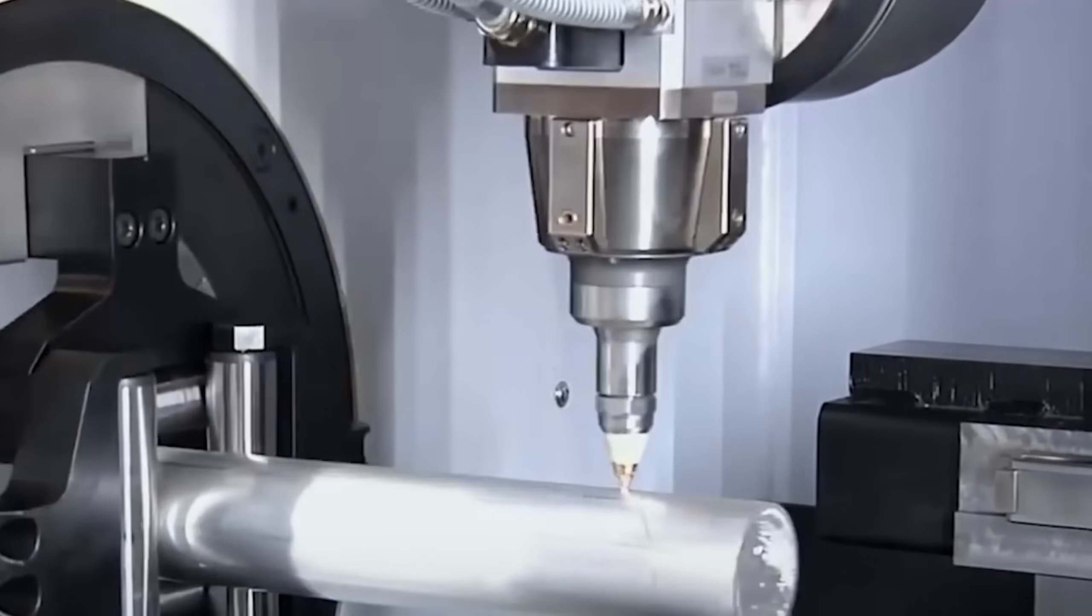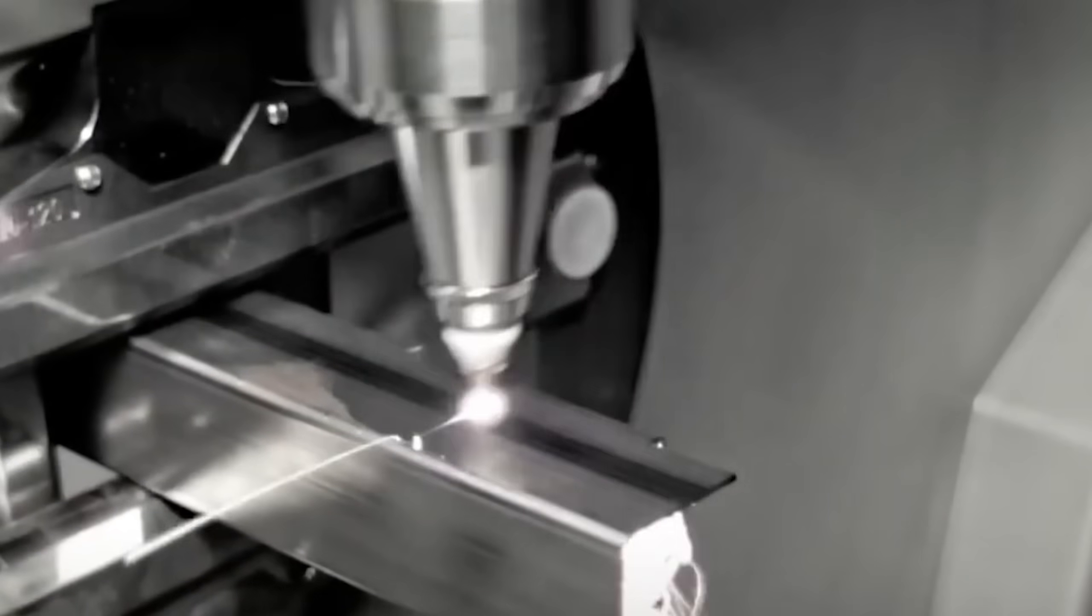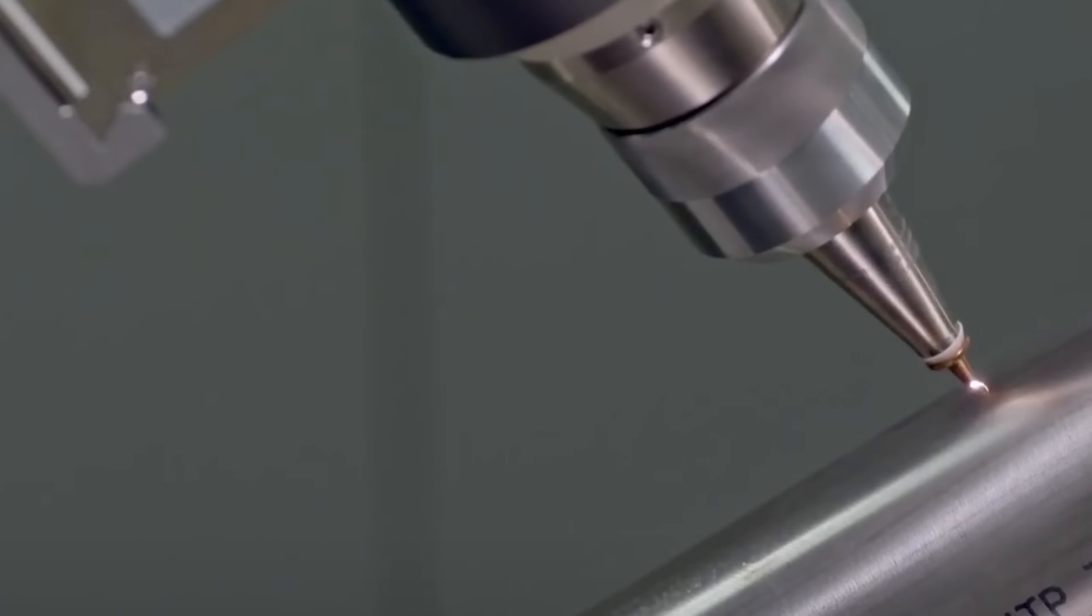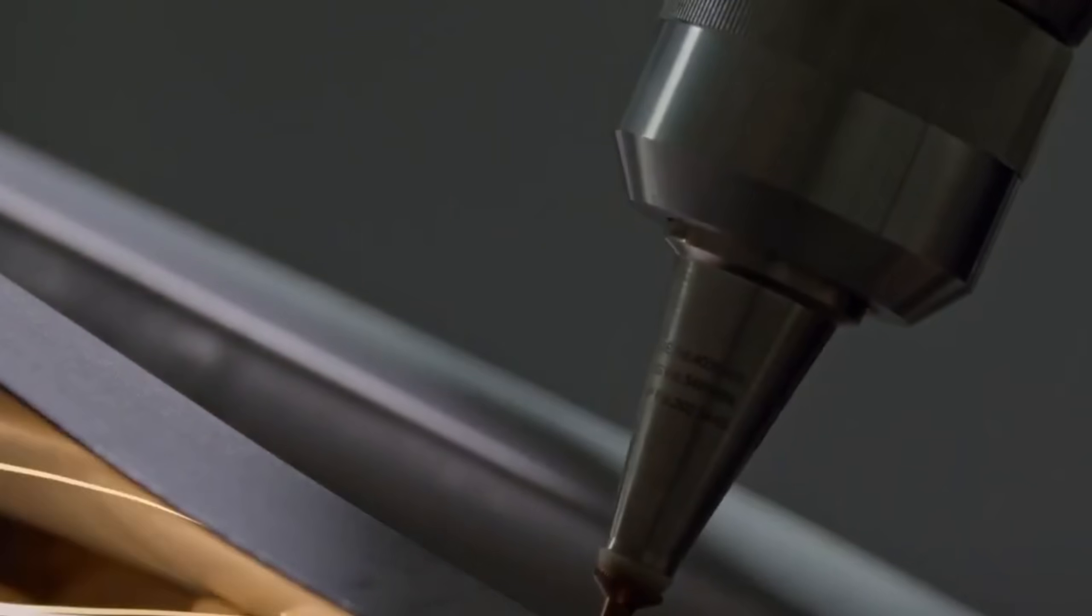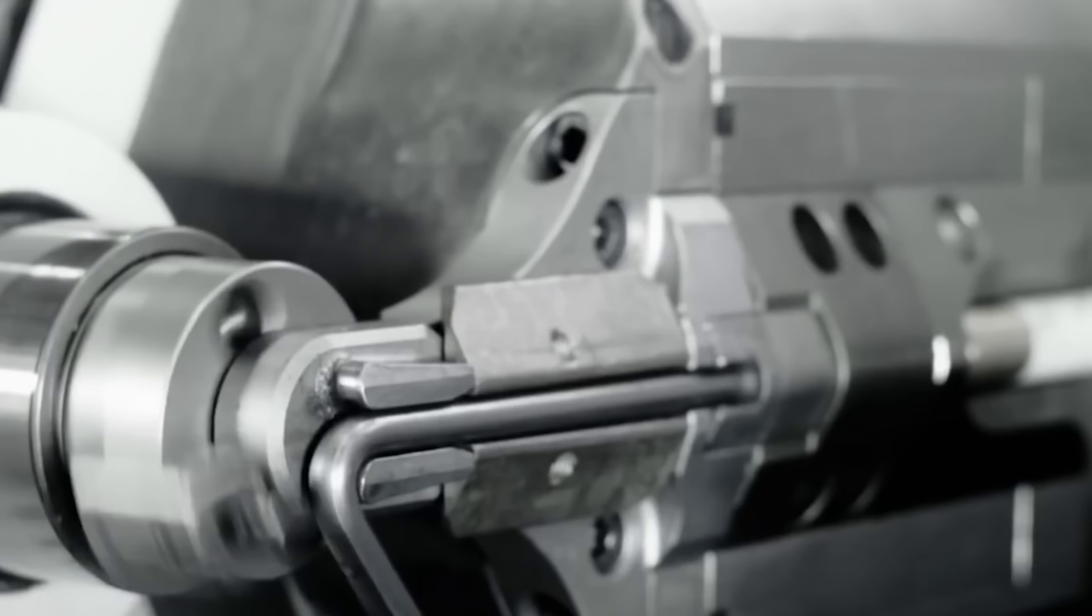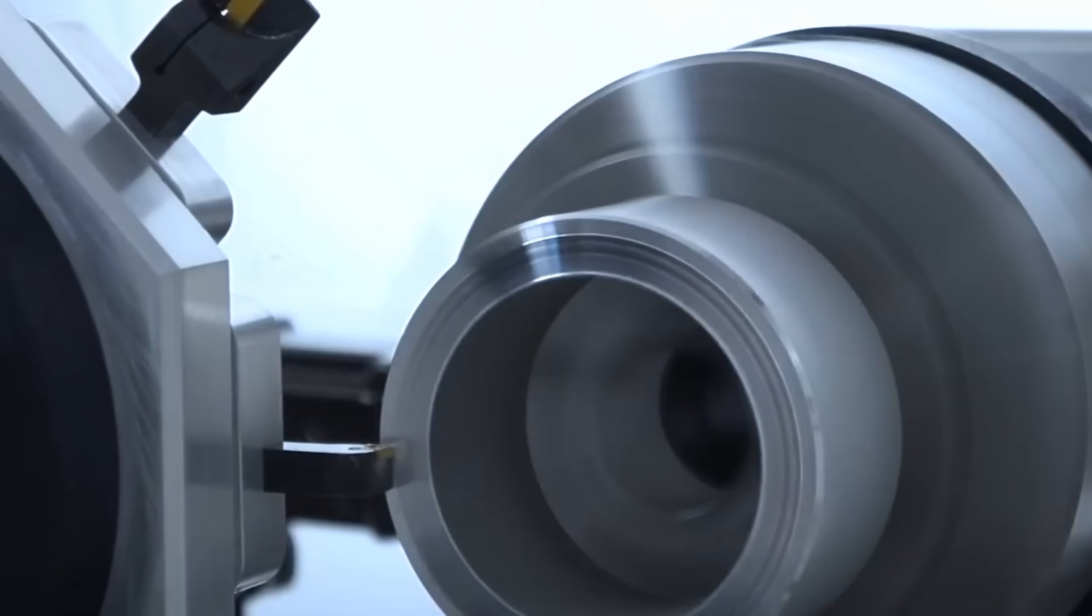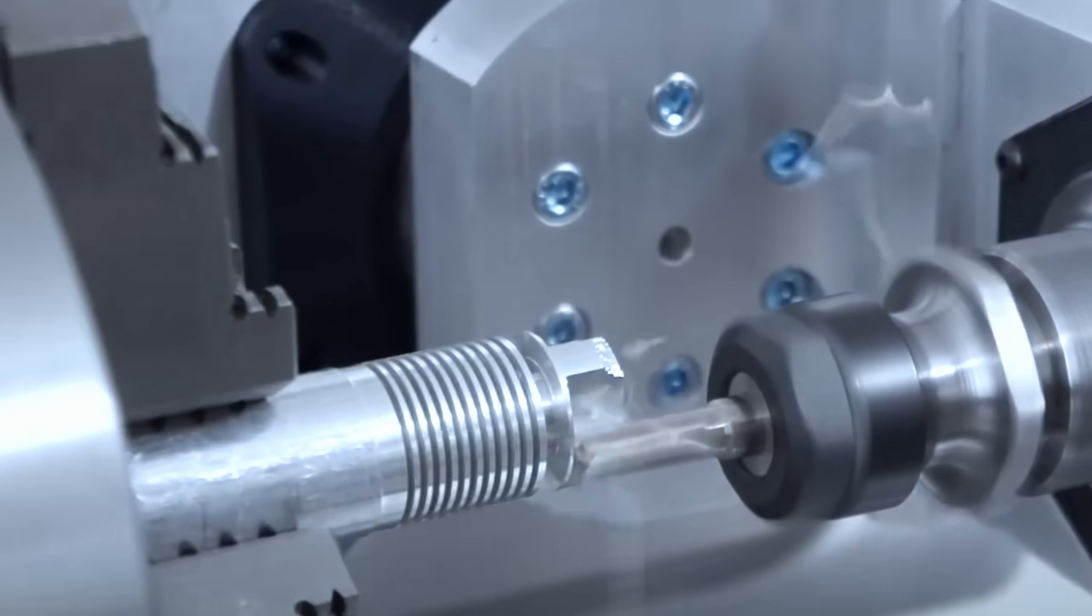The CNC machine also cuts the notches and locking grooves that control the cylinder's rotation. These features have to match the rest of the revolver's mechanism, so every edge and surface is checked against digital blueprints. Once the basic shape is complete, the cylinder is removed from the machine and handed over to technicians for further inspection.